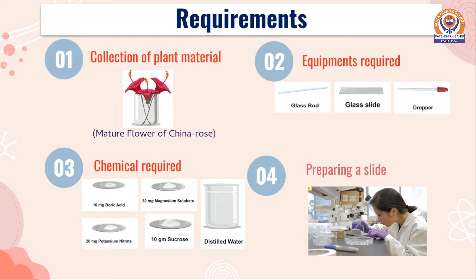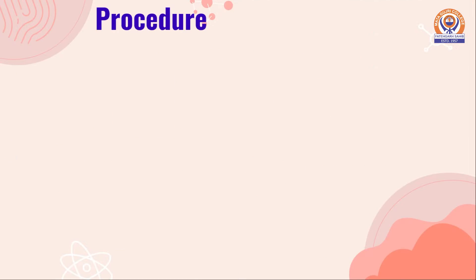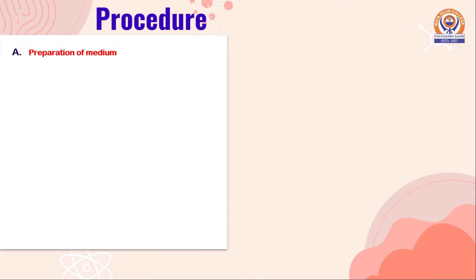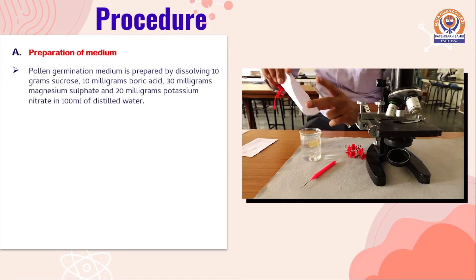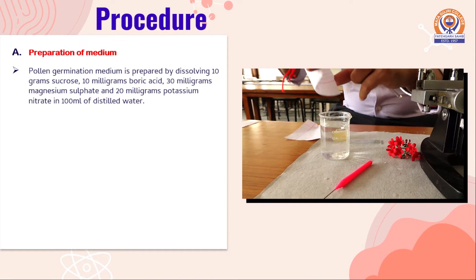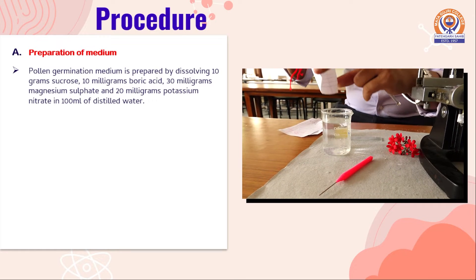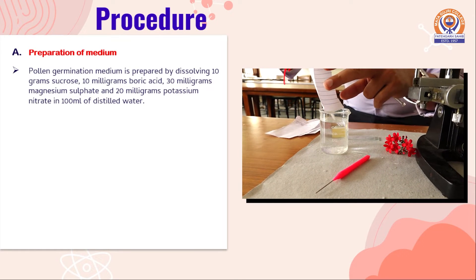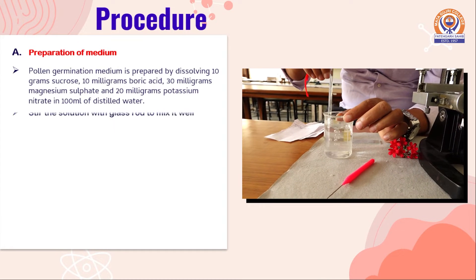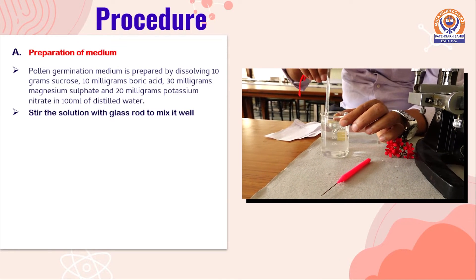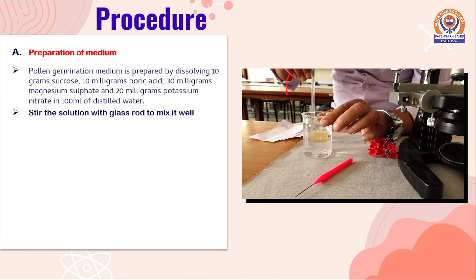The procedure is divided into two parts. The first is the preparation of medium. Pollen germinating medium is prepared by dissolving 10g sucrose, 10mg boric acid, 10mg magnesium sulphate, and 20mg potassium nitrate in 100ml of distilled water. Stir the solution with a glass rod to mix it well.